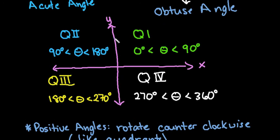90 degrees would have the terminal side fall on the positive y-axis. 180 degrees would have the terminal side fall on the negative x-axis, and 270 degrees would have the terminal side fall on the negative y-axis. At 360 degrees, we would be back to the initial side because we rotated a complete 360-degree angle.